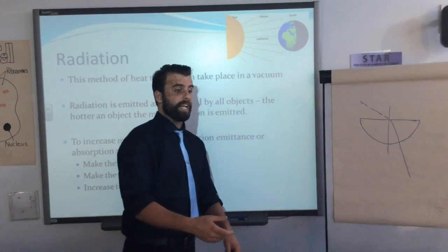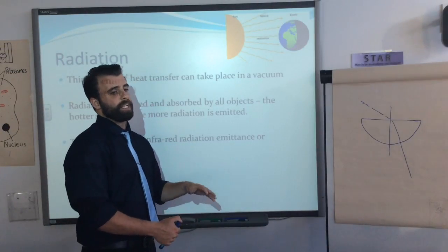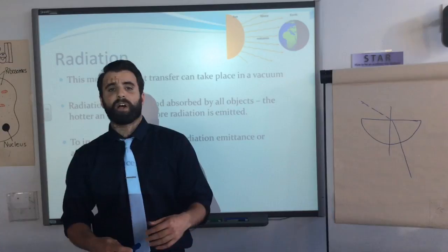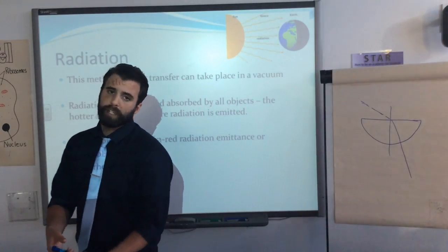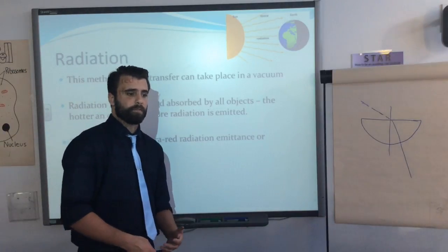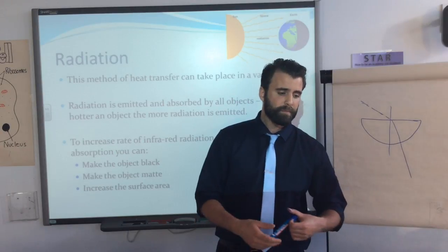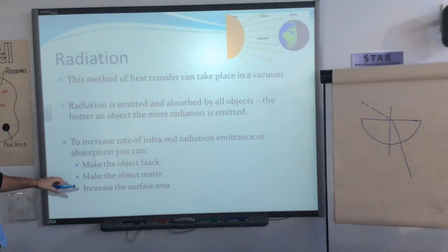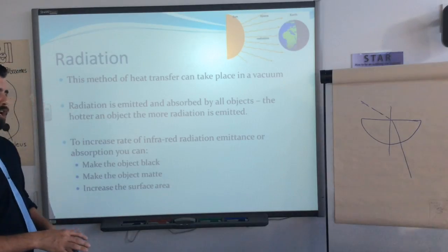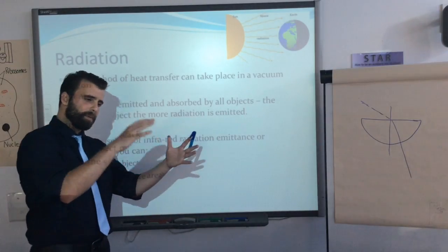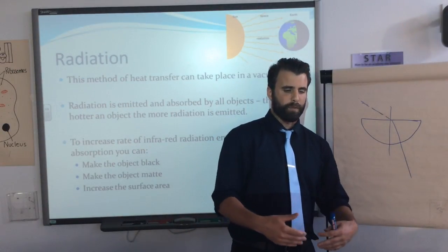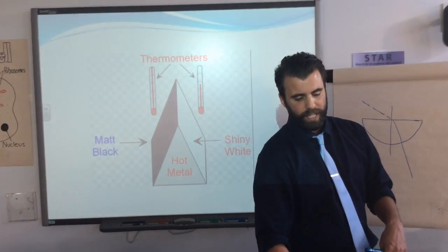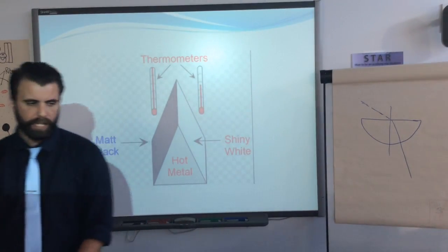Infrared radiation is a method of heat transfer that can take place in a vacuum because it's an electromagnetic wave. It's emitted and absorbed by all objects. The hotter the object, the more infrared is emitted. To increase the rate of infrared emission or absorption, make the surface matte black — a matte black surface absorbs and emits the most radiation, while a shiny surface reflects more.